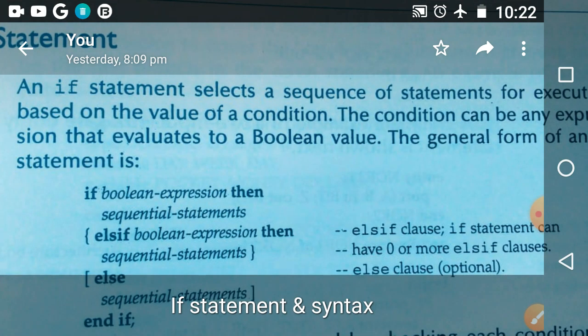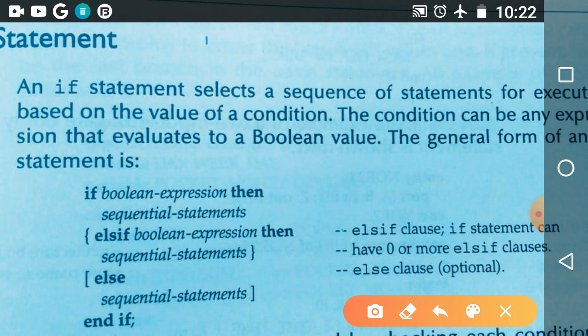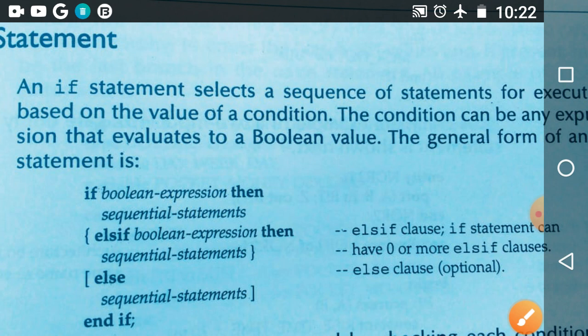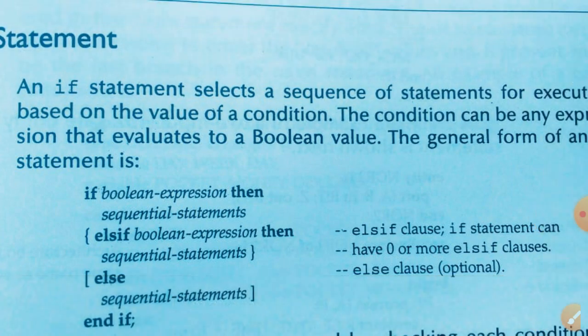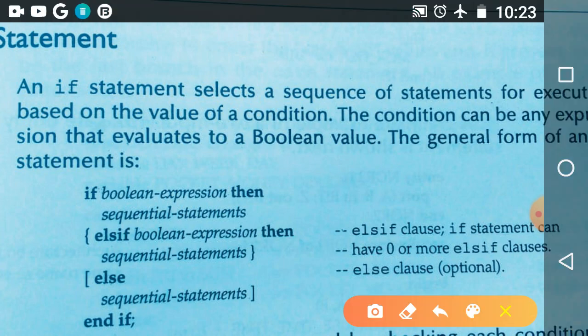Next let us study the if statement. The if statement is also called a sequential statement. Till now, all the statements we studied are sequential statements, but they are all executed line by line without checking any condition. In some situations we need to check conditions, so we study the if statement. The if statement checks conditions, and depending on whether the condition is true or false, it executes the corresponding block of sequential statements.